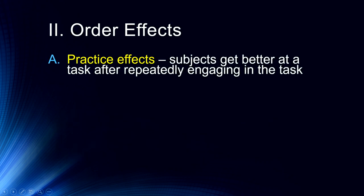One of the biggest problems in within-subjects designs are order effects. Because we're repeatedly measuring people, we have to be very careful about the order in which we measure participants. The first issue is practice effects — subjects simply get better at a task after repeatedly engaging in it. People tend not to improve much on episodic memory tasks, but on skill-based tasks like sequence learning or mental rotation, they will definitely get better with more practice. So you have to think very carefully about how you might order your independent variable.